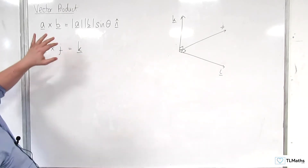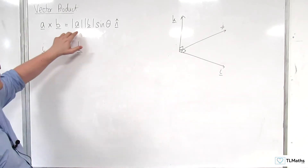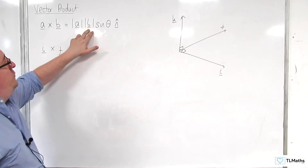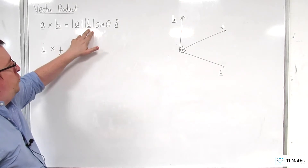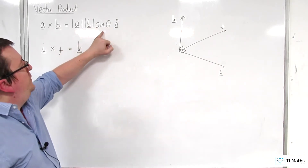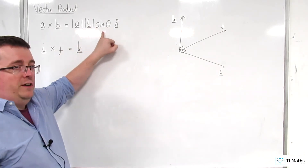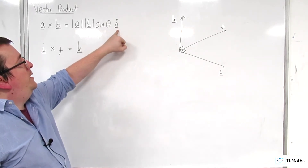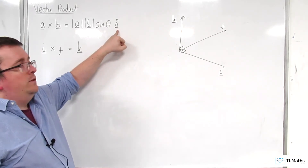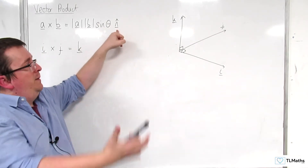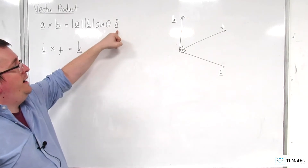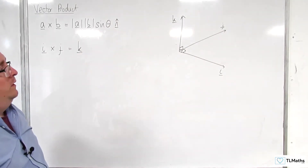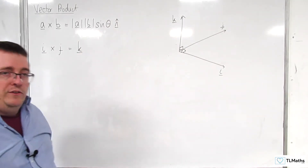To be clear, here we have the length of i, which is 1, times the length of j, which is 1, times sine of 90 degrees, which is 1, times a normal vector that is perpendicular to both i and j of length 1. And so that is k.